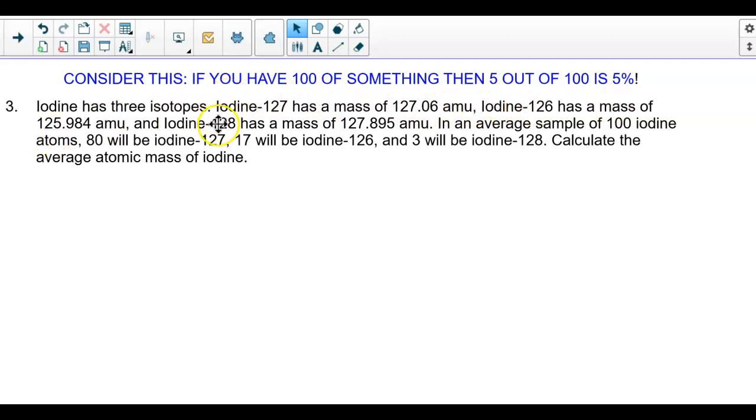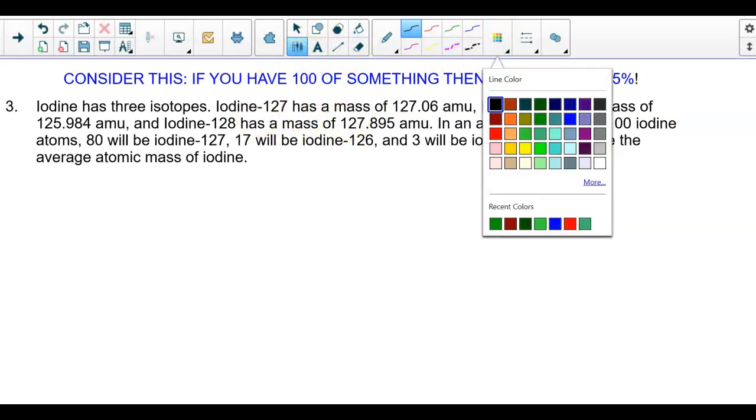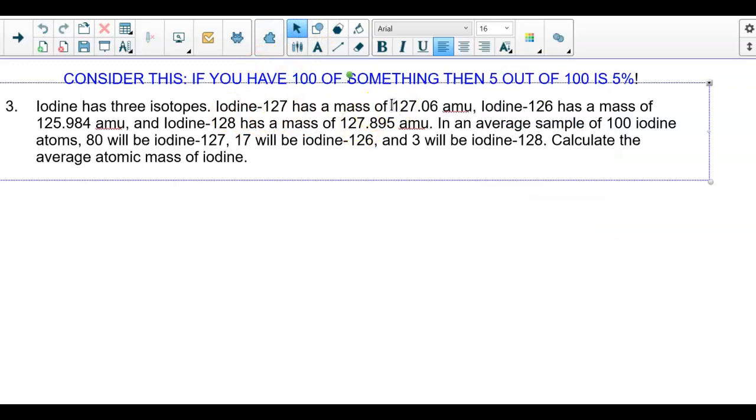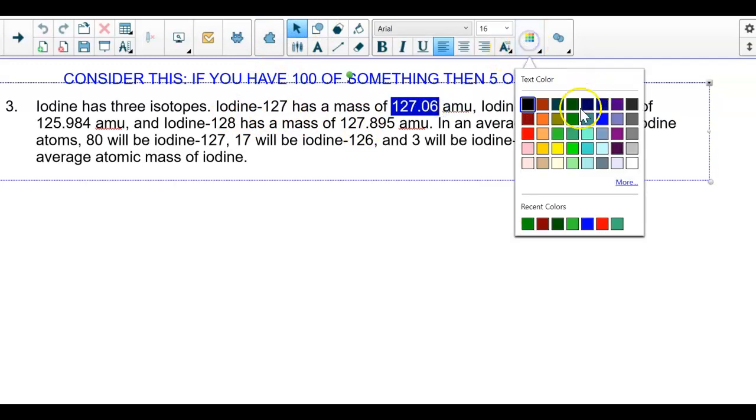So iodine-127 has a mass of 127.06 amu, iodine-126 has a mass of 125.984 amu, and iodine-128 has a mass of 127.895 amu. As I read through these three masses, I notice that 127 goes with this, 126 goes with this mass, and 128, iodine-128 goes with this mass. So I'm going to use the color to help me think through this.